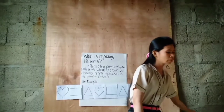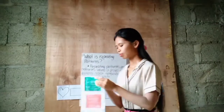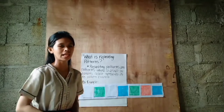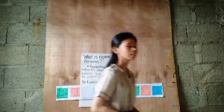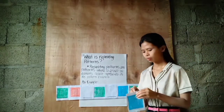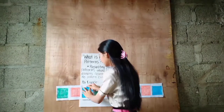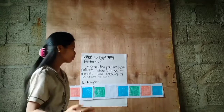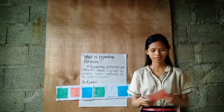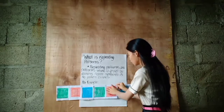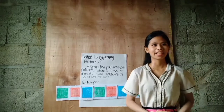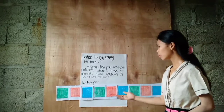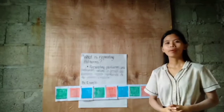How about this another set of flashcards? What do you think is the missing color, class? Very good — color blue. How about the second line? What do you think is the missing color? Yes, Clarice. Very good — it is color red. So what do you think is the pattern that is being repeated? Very good. The color green, red, blue, green, red, blue, green, red, and blue.